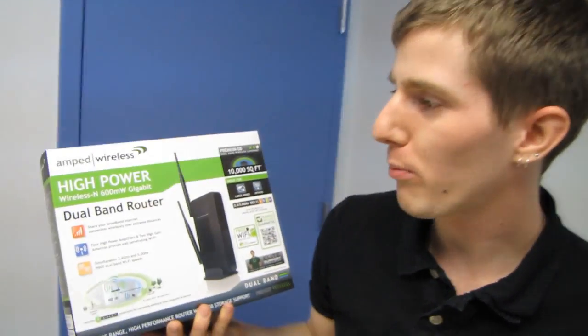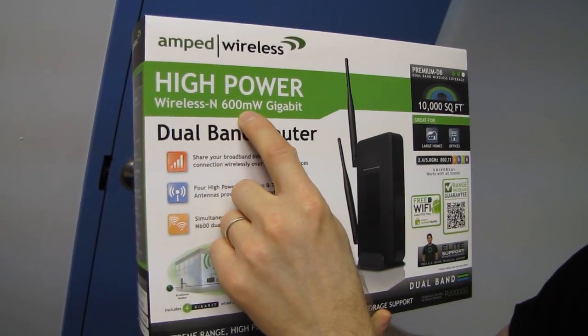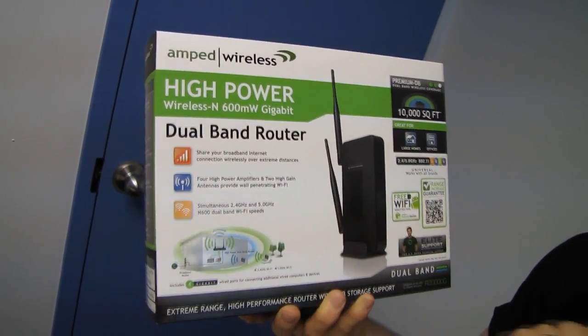Welcome to my unboxing of a pretty cool product. This is the Amped Wireless high-power wireless N 600 milliwatt gigabit dual band router.